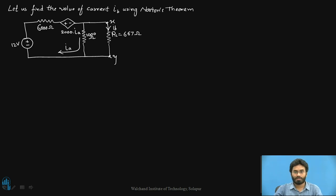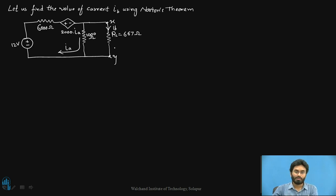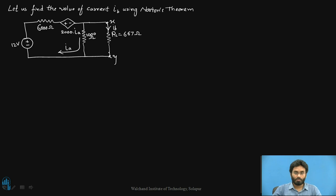In cases where we apply Norton's theorem to linear circuits with independent and dependent sources, we first deactivate the load (667 ohms), short-circuit it, and identify the short-circuit current ISC. Then we identify VOC by open-circuiting the terminals, and apply Ohm's law: RTH = VOC / ISC to find the Norton resistance RTH.